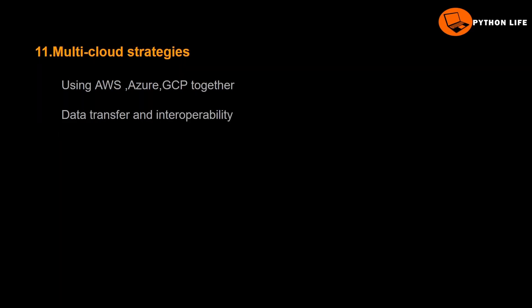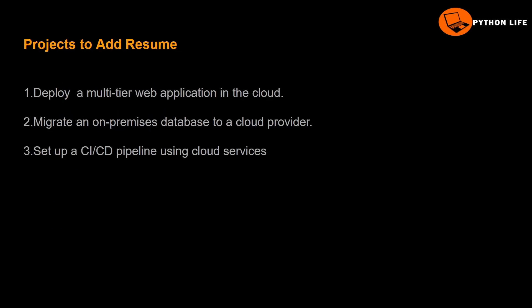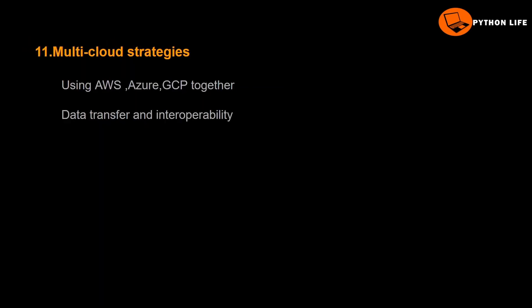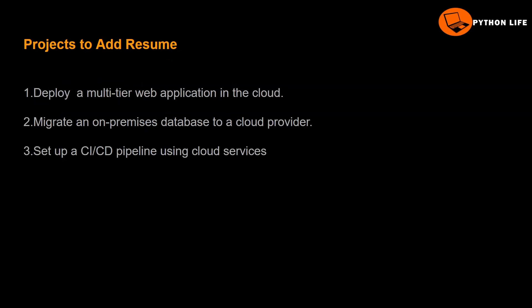There are multi-cloud strategies. What are multi-cloud strategies? Using AWS, Azure, and GCP together — data transfer and interoperability across platforms.